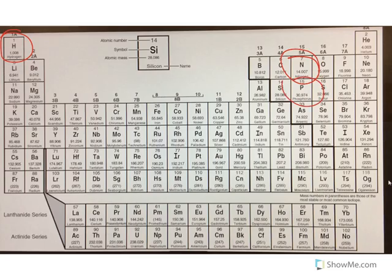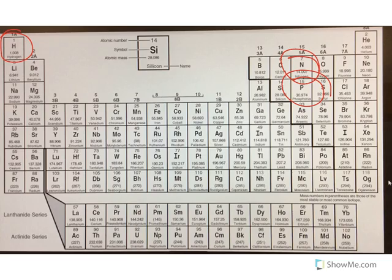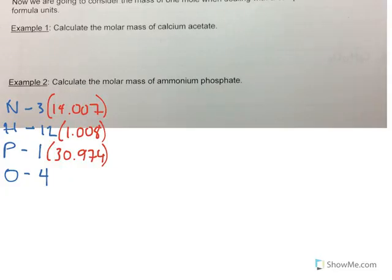Phosphorus, 30.974. And then oxygen, 15.999. Okay?